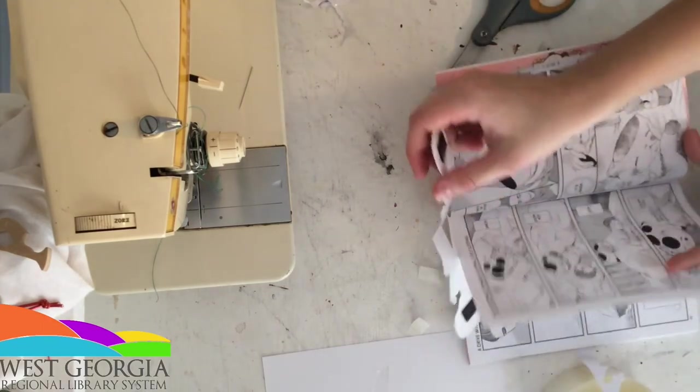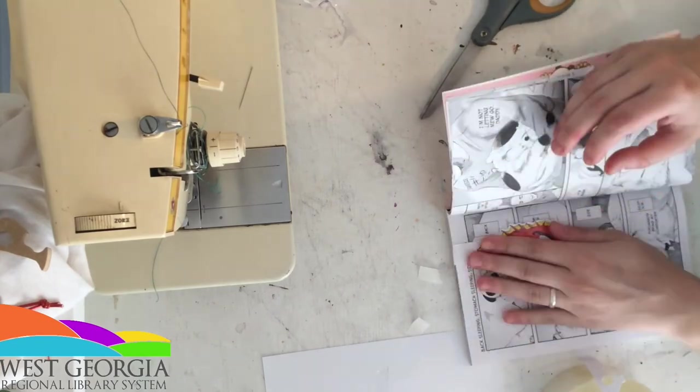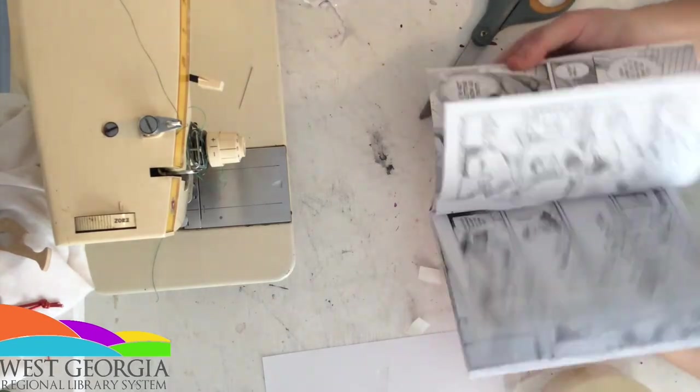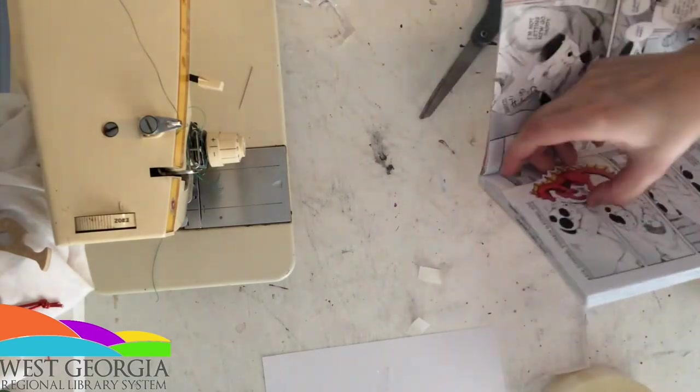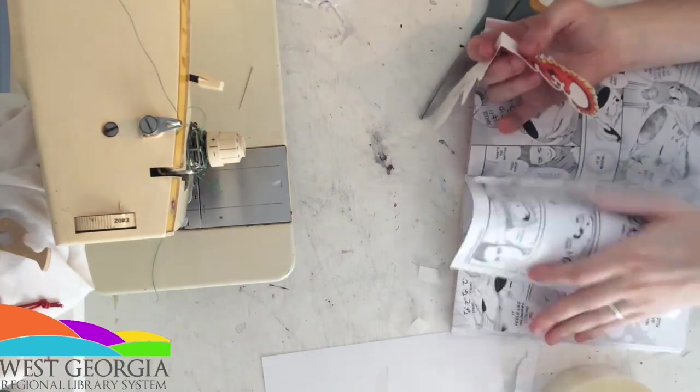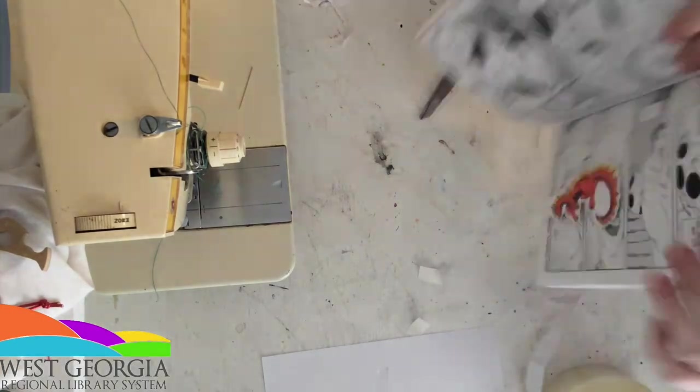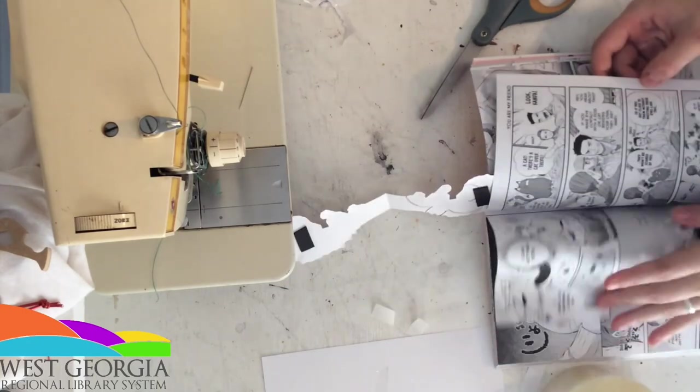As you can see here, these magnetic bookmarks can hold one page very well. They don't fall out. They're very easy to use and they hide very nicely in your book. They can hold up to about four pages easily. So if for any reason you need to clip four pages in a book, you can definitely do that.